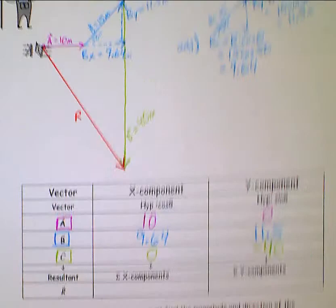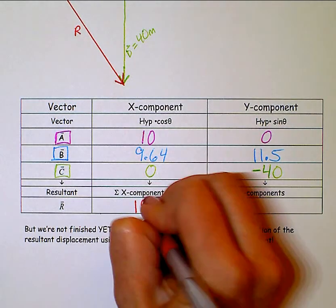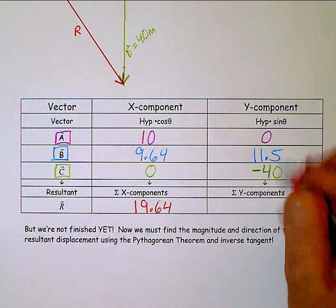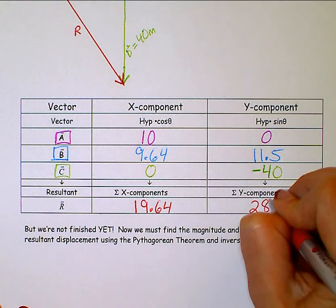From here, sum up all of your x components, and I get 19.64. And sum up these, and I get negative 28.5.